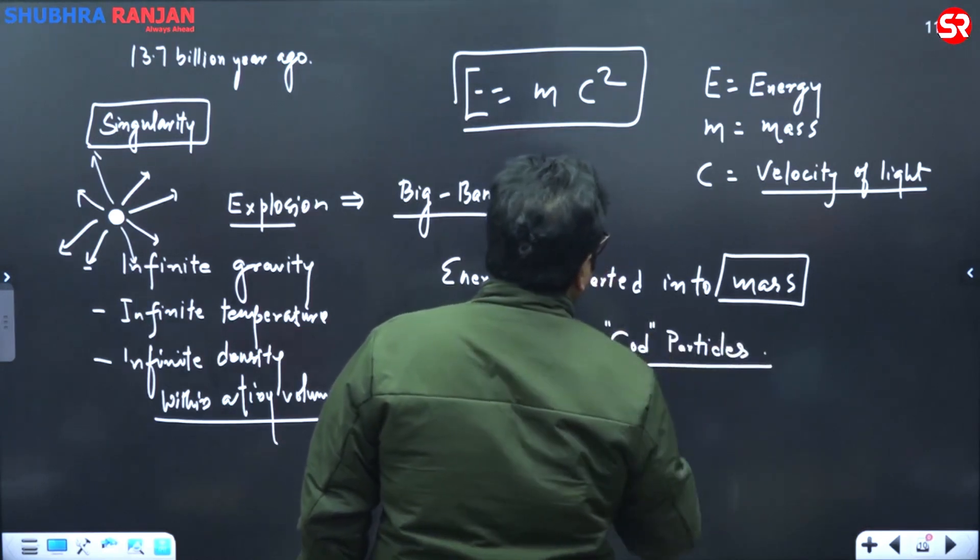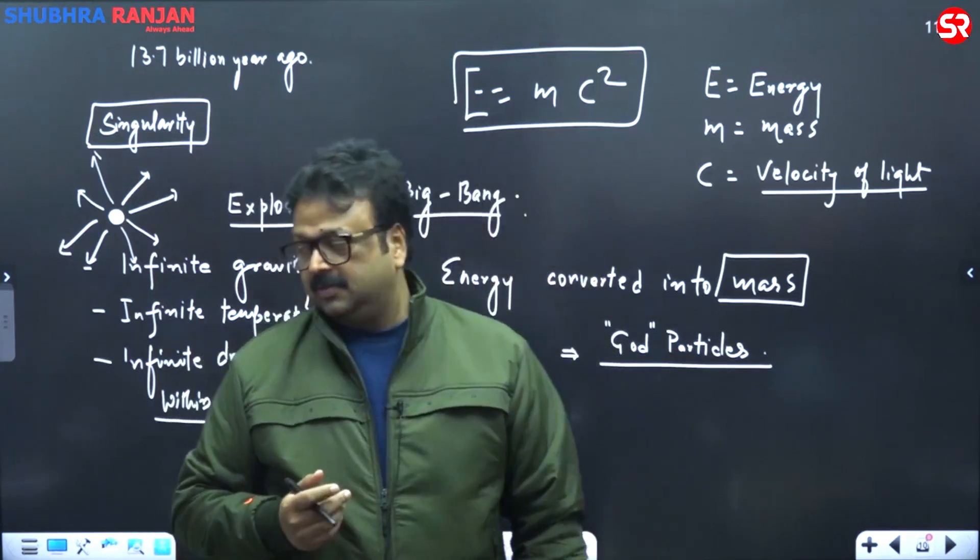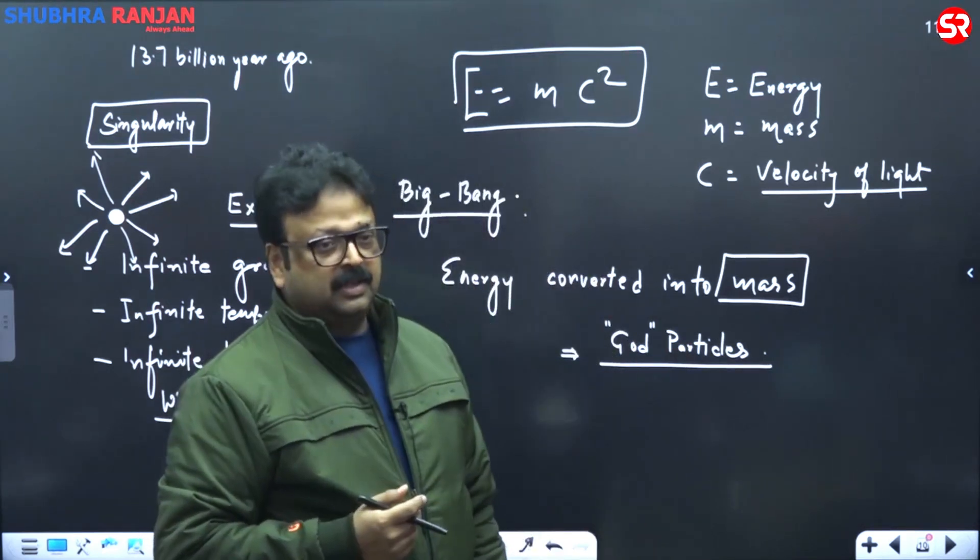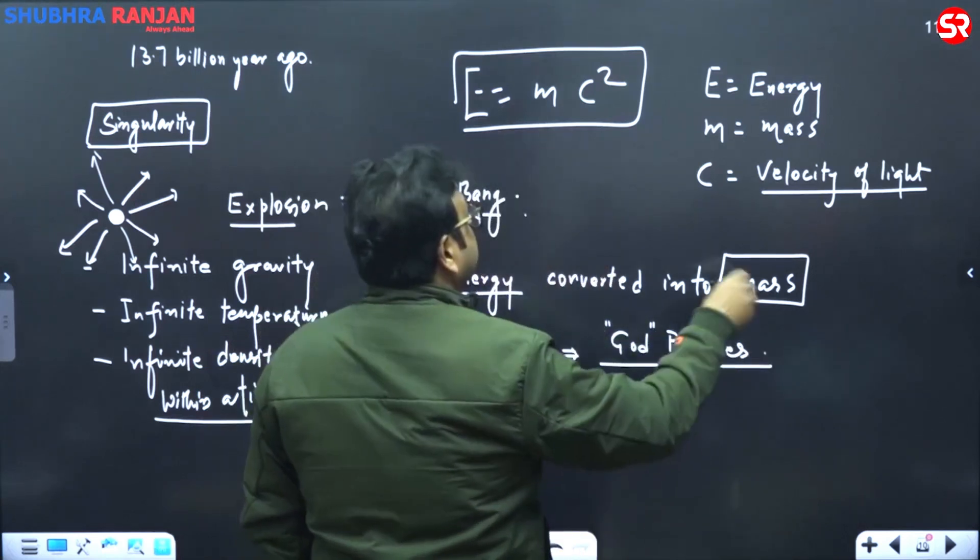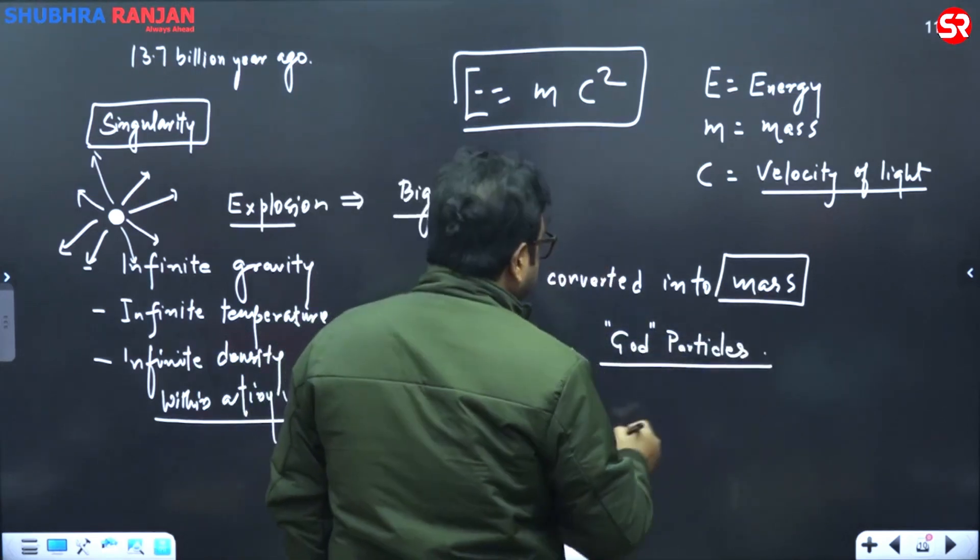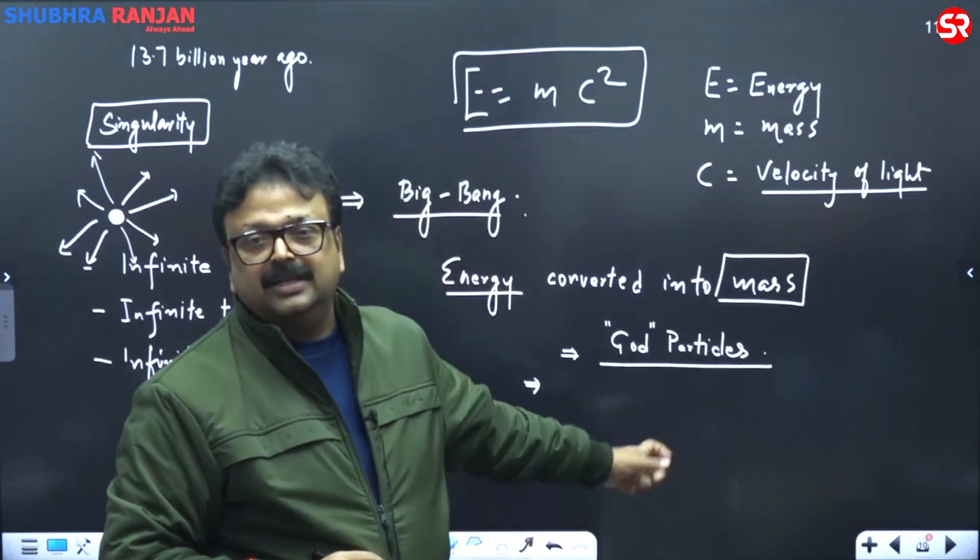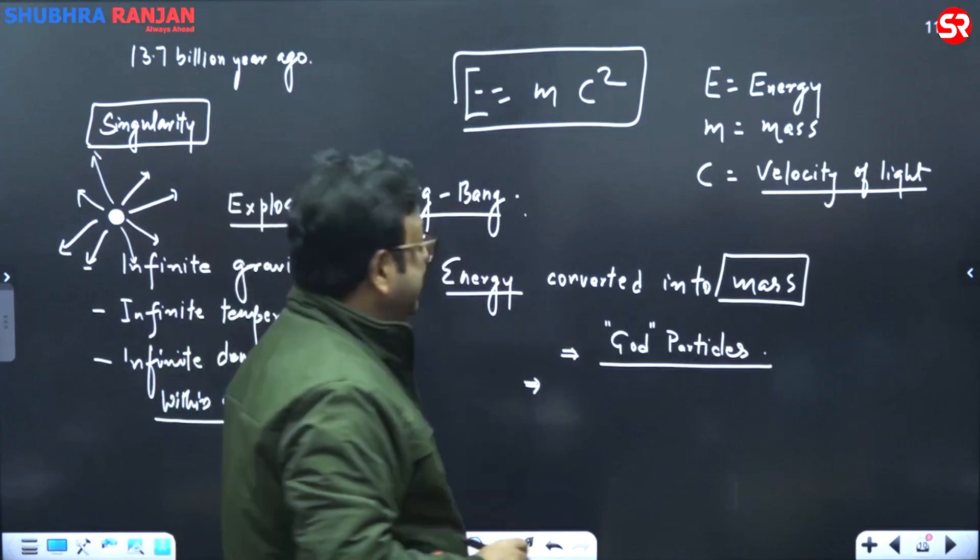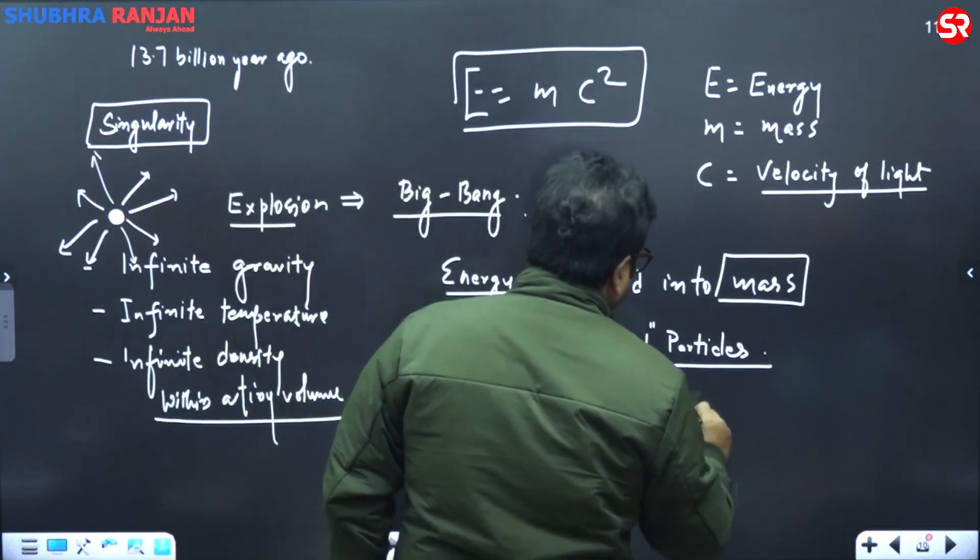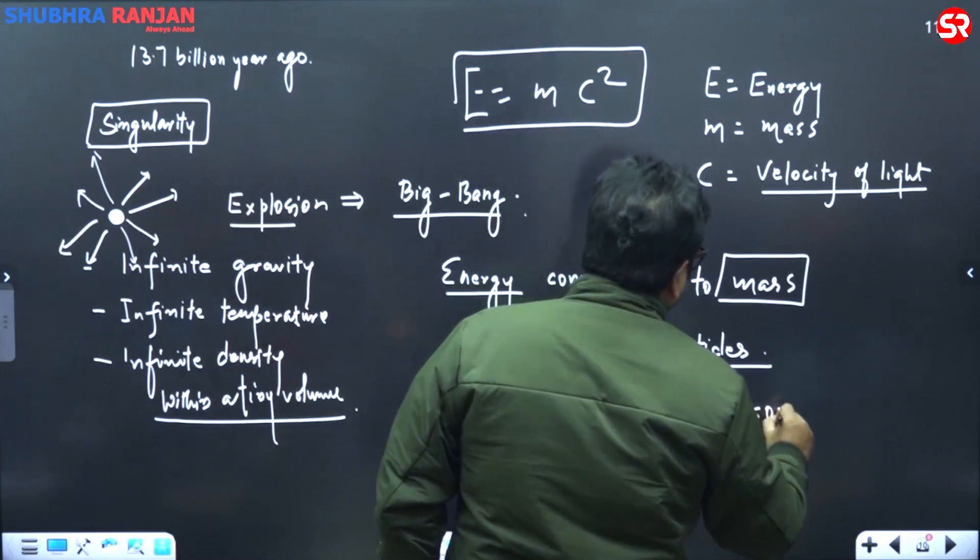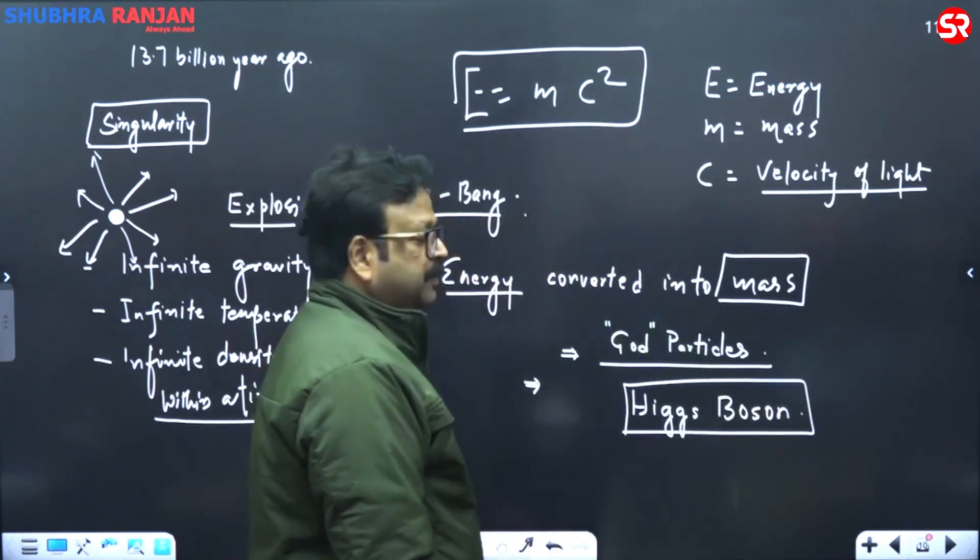Fine, the name God particle is also having a story. Those who have this physics, particle physics, they know this story God particle. And who gave this theory that energy converted into mass and God particles were formed. Theoretically, it was given by Peter Higgs. And that is why this particle is called as Higgs Boson. One of the Indian scientist name is also here. Higgs Boson, this God particle were formed.